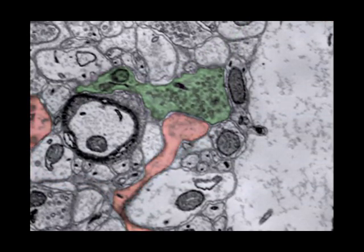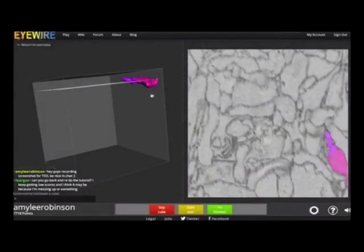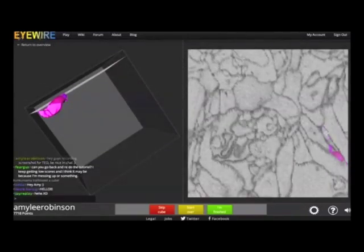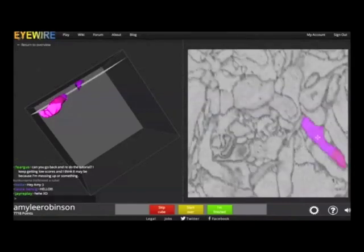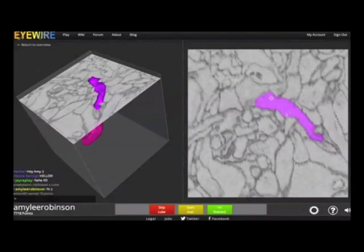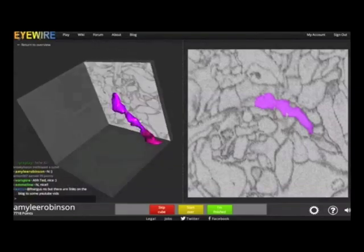In the example you just saw, the computer did a perfect job. This is rare, and it's why we need iWires. People who play the iWire game identify where the computer has made a mistake and misidentified a boundary. Then, they fill in what the computer missed. Many people compare the game to a 3D coloring book.